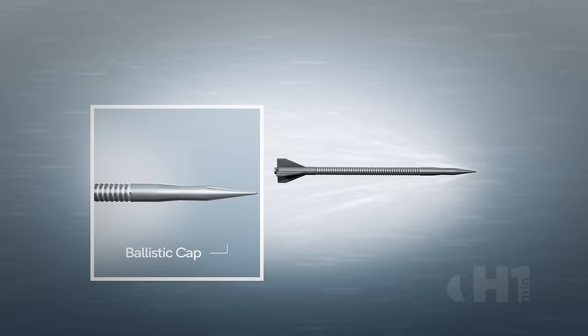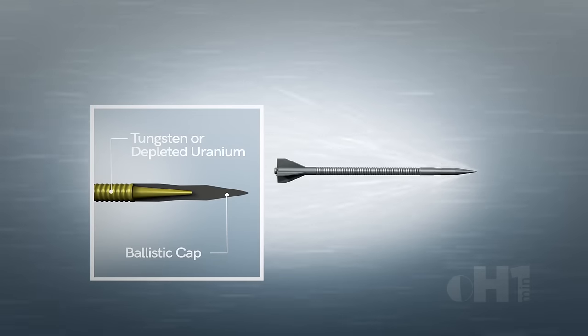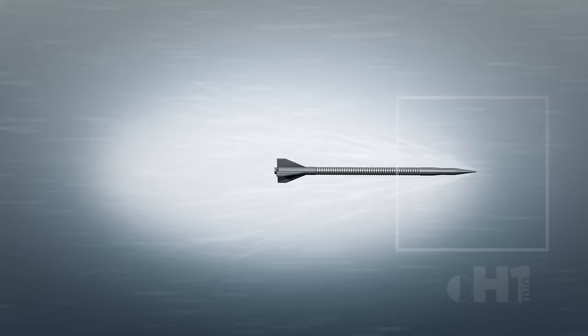The core is composed of tungsten or depleted uranium, materials that are denser or heavier than the armor intended to protect.